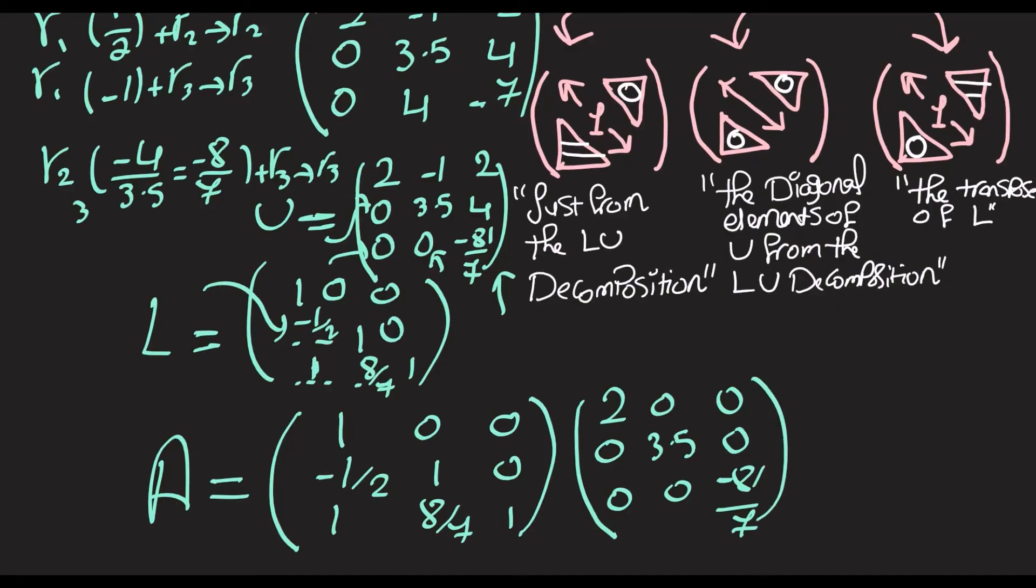And then U is gonna be just the same U except that we divide each row by the corresponding element in D. So the first row will be divided by 2, so we get 1, negative half, 1. Second row we divide by 3.5, so we get 0, 1, 8 over 7. Third row we divide by negative 81 over 7, so we get 0, 0, and 1.